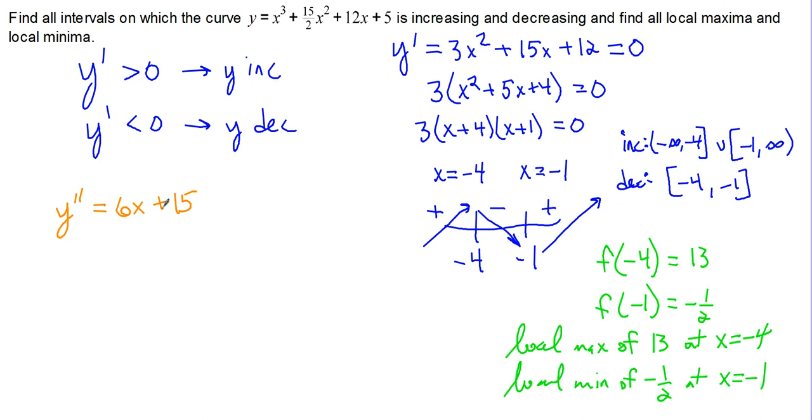If we take the x value at which our derivative is equal to 0, so negative 4, and plug that in, y double prime of negative 4 is equal to negative 24 plus 15, which is less than 0. The second derivative test tells us that if at a critical value, where our derivative is 0, the second derivative is negative, we have a max. And that's exactly what we got at x equals negative 4, a local max.